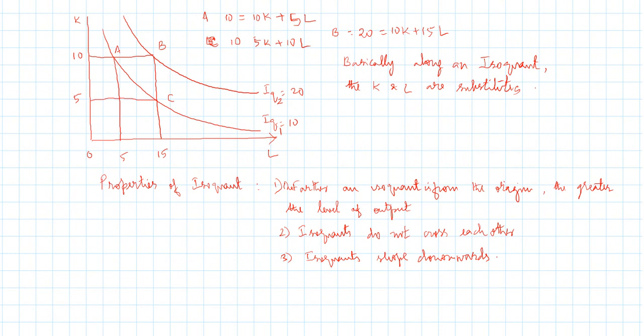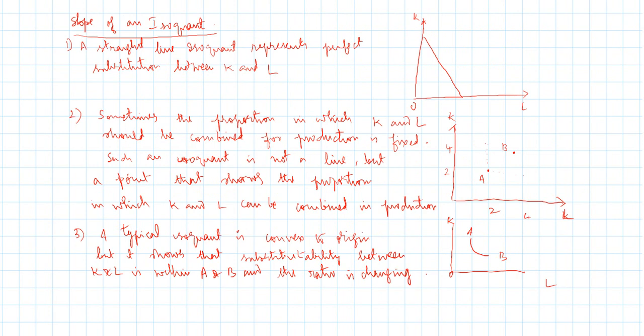The slope of an isoquant can take different forms. It can be a straight line if the two factors of production are perfect substitutes — meaning for every unit of one factor reduced, you can substitute exactly one unit of the other at every point and maintain the same level of production. A downward-sloping straight-line isoquant represents perfect substitutability between factors.